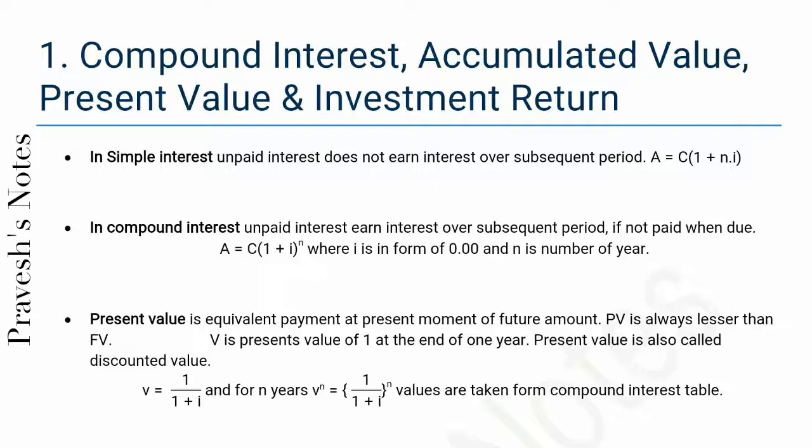In compound interest, unpaid interest earns interest over subsequent periods if not paid when due. A = C(1 + i)^n where i is in form of 0.00 and n is number of years.